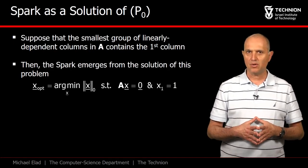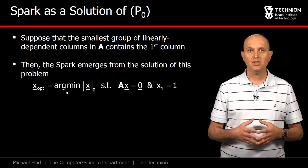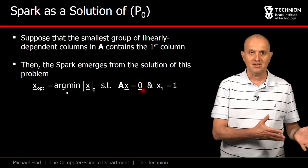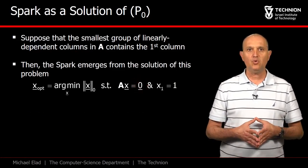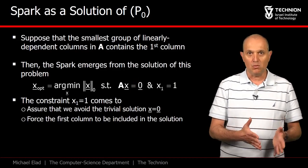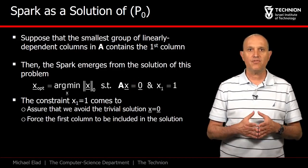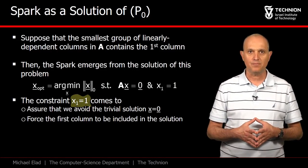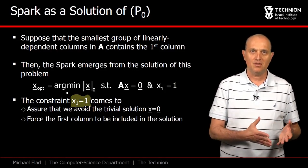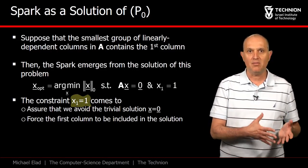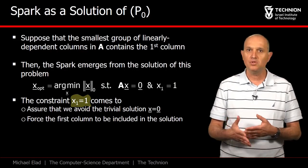This is the simple P0 problem, where the linear equation is homogeneous, that is, B is set to be 0. In order to avoid the trivial solution x equals 0, we force the first entry in x to be 1. Since we have assumed that the first column is involved in the best set, x1 being 1 loses nothing.